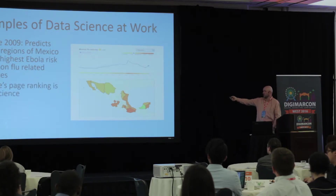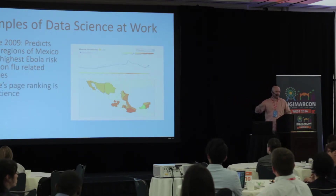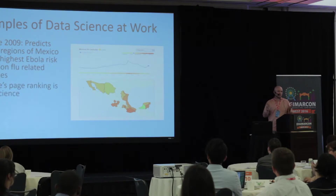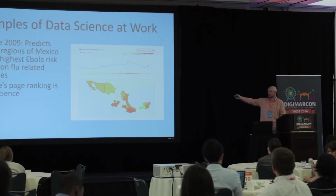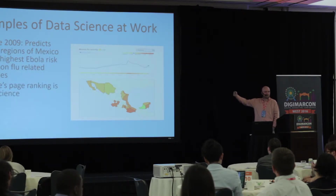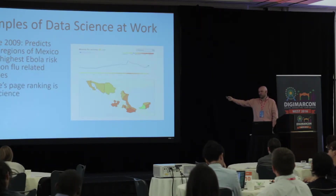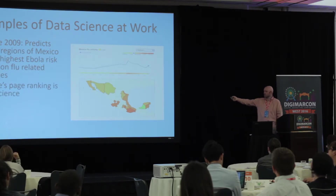Google's page ranking is really pure data science — they're using very complex algorithms and backlinks. Google is sort of one of the founders of some of the most complex forms of data science on the web.